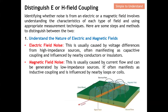As mentioned earlier, it is very important to distinguish the noise source — whether it is from E-field (electric) or H-field (magnetic) coupling. Based on the different coupling type, we need to adopt different solutions. Before we can identify whether noise is from an electric or magnetic field, we need to understand the characteristics of each type and use appropriate measurement techniques.